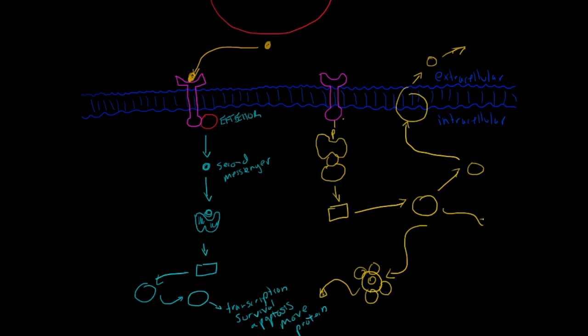Or this one can go all the way over here. Or this molecule can travel into the nucleus and cause some mRNA to be made, and then a protein to be synthesized. And a protein could be one of these kinases that's used in these signaling pathways.